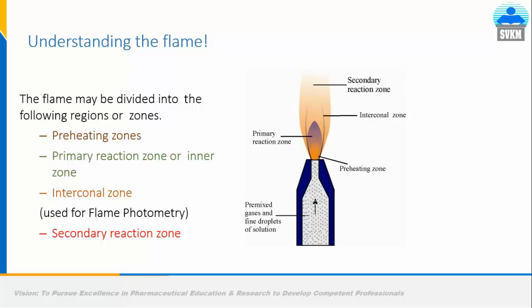Now let's understand the flame itself. The flame can be divided into various zones: the pre-heating zone, primary reaction zone or inner zone, interconal zone — used for flame photometry — and the secondary reaction zone. Observing a flame, we must understand which area to focus on for a particular protocol. The interconal zone, just above the blue part, is the site where we focus in flame photometry.